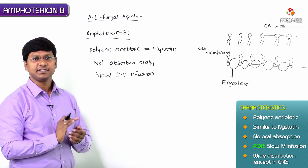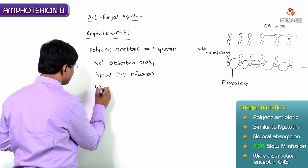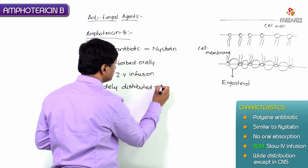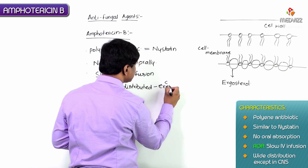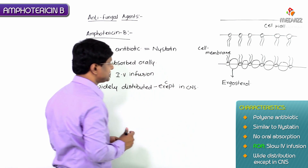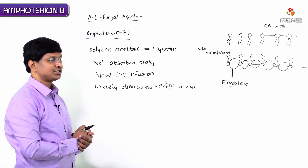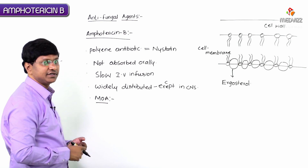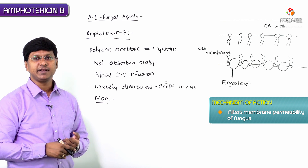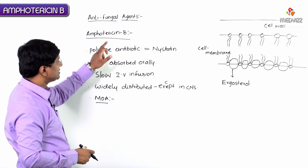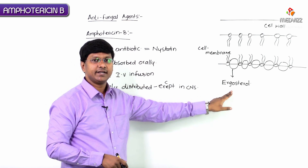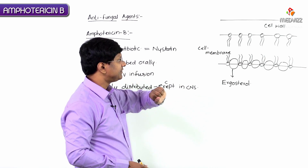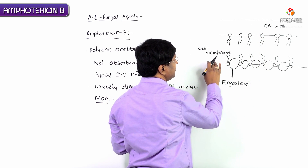Amphotericin B is widely distributed except in the CNS. Regarding its mechanism of action, it is a polyene group antifungal drug that acts by altering the membrane permeability of the fungal organism. It binds with the ergosterol of the cell membrane of the fungal organism.